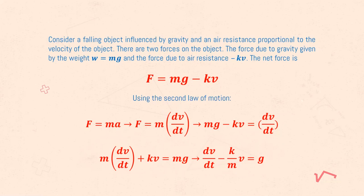The net force is F equals mg minus kv. Using the second law of motion and substituting a for dv over dt and isolating g, we get the differential equation dv over dt minus k over m times v equals g.